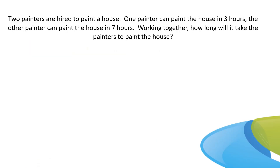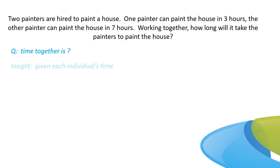Example: Two painters are hired to paint a house. One painter can paint the house in three hours, the other in seven hours. Working together, how long will it take them? The first thing we do is pull out what we've been asked to find — in this case, time together. We also notice we've been given each individual's time, which means we can use our shortcut.